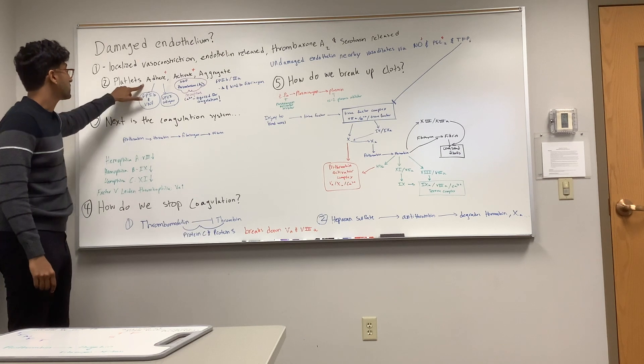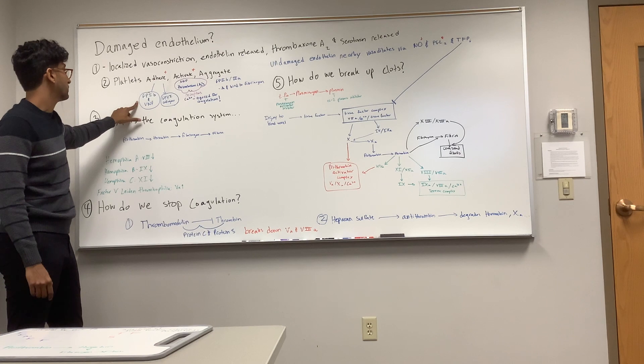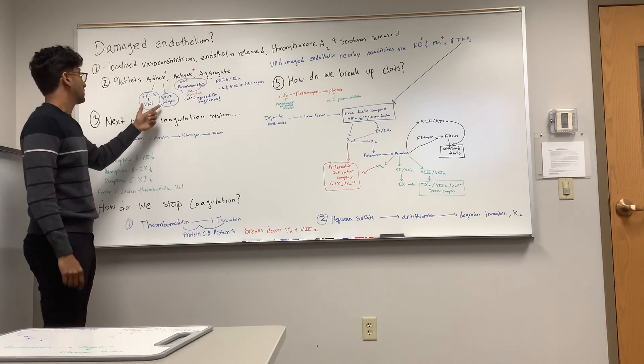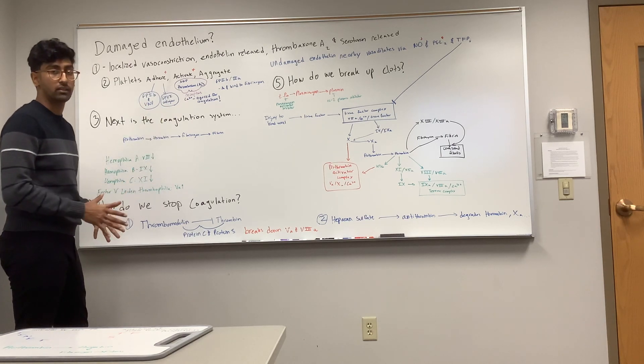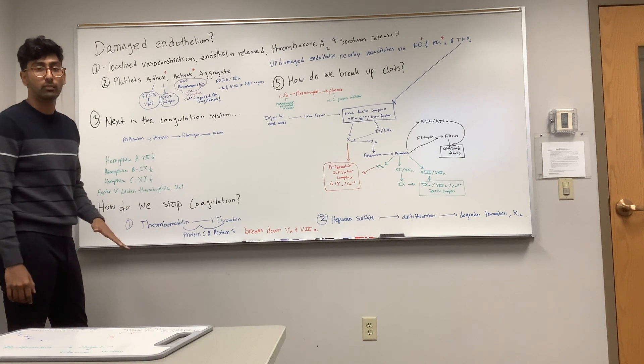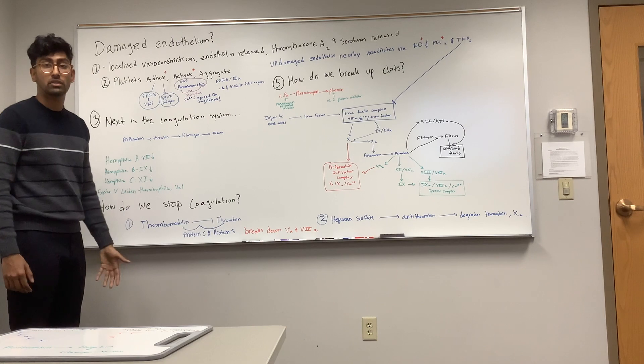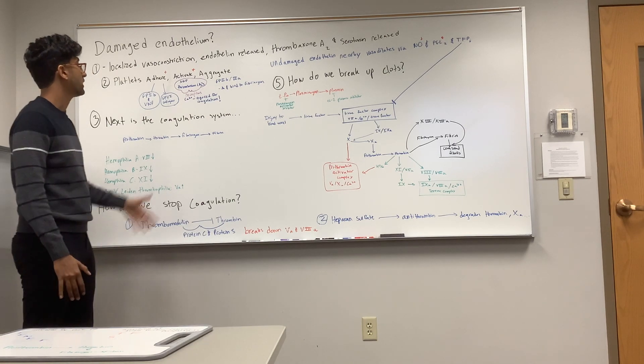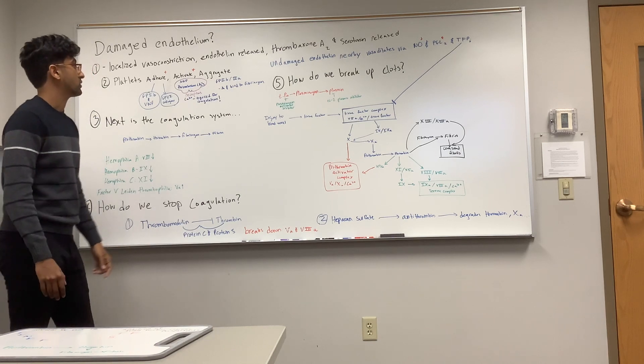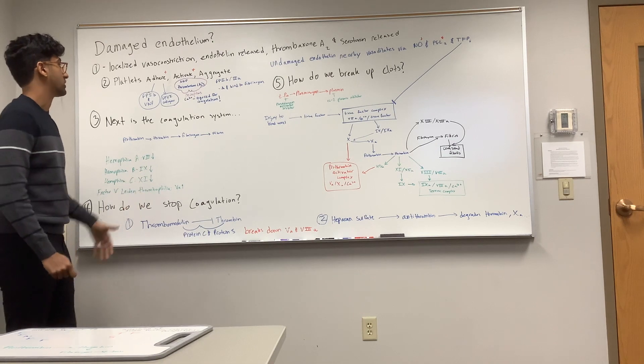For the adhesion, we're going to have glycoprotein 1B combined with von Willebrand factor making a complex, and glycoprotein 6 combined with collagen for another complex. Once we get that to happen, we can get some activation going. We're going to release ADP and thromboxane A2, and that is going to bind to GPCR receptors. We're going to aggregate and activate glycoprotein 2B and 3A receptors. That's going to cause a conformational change, bind to fibrinogen, and get a process underway.